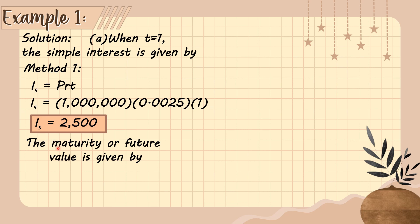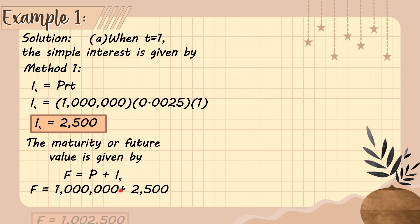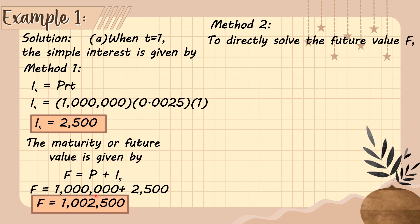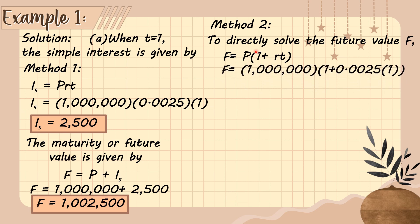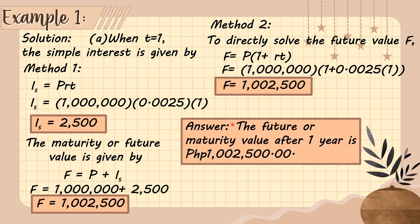Now, looking for the maturity or future value, we use the method one formula: F is equal to P plus I sub S. Substituting, we have 1,000,000 plus 2,500. Therefore, the future value is P1,002,500. Using method two directly: F equals P times 1 plus rate times time, which is 1,000,000 times 1 plus 0.0025 times 1, giving us the same future value of P1,002,500 after one year.